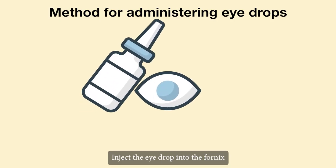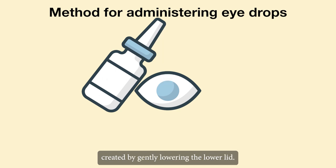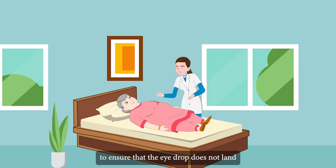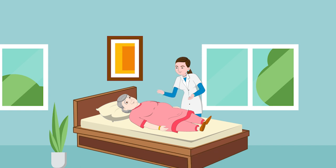Instill the eye drop into the fornix created by gently lowering the lower lid. Request that the patient look up to ensure that the eye drop does not land directly on the sensitive cornea.